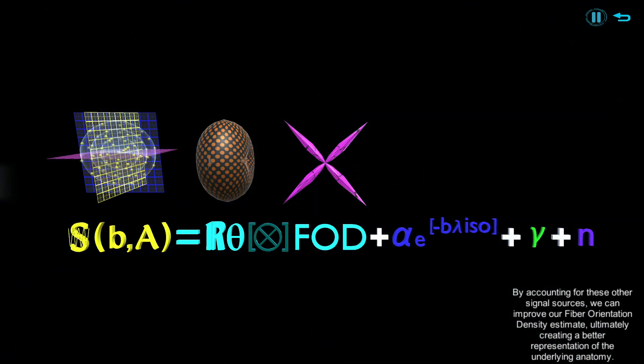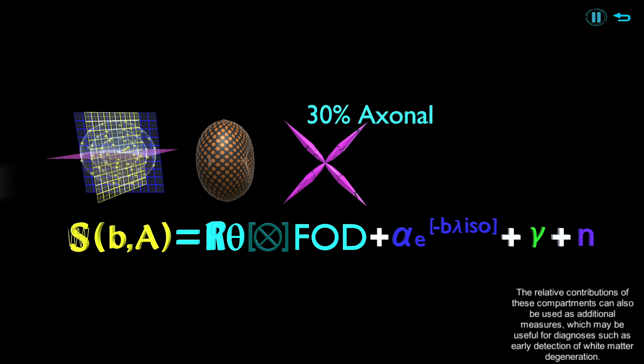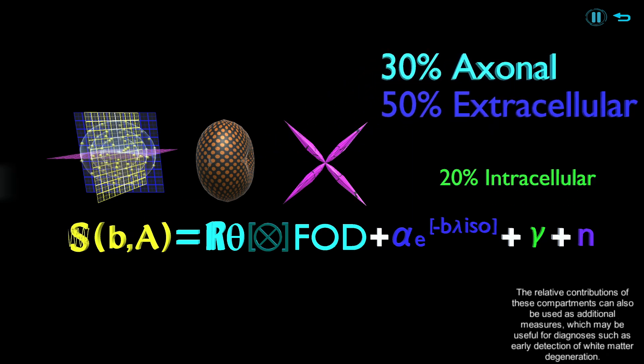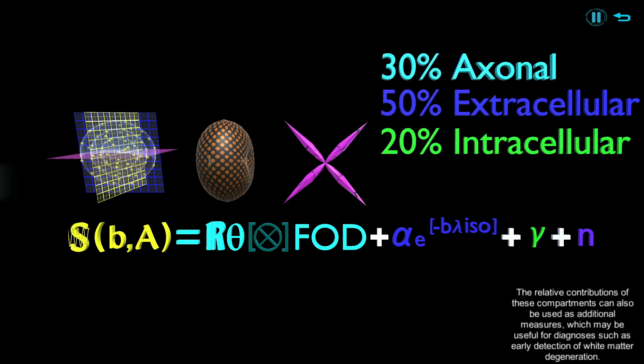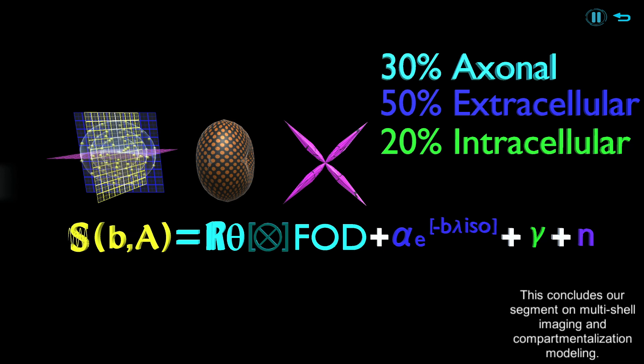The relative contributions of these compartments can also be used as additional measures, which may be useful for diagnoses such as early detection of white matter degeneration. This concludes our segment on multi-shell imaging and compartmentalization modeling.